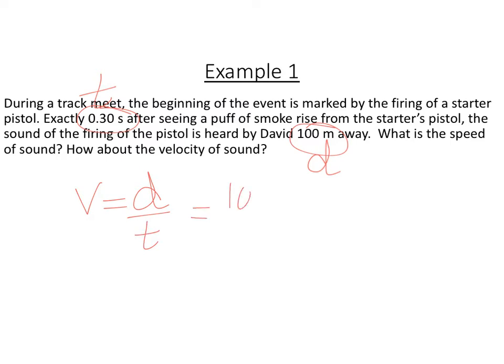So V equal D over T. So distance is 100, time is 0.3. So that gives us 333, don't forget your units, meters per second. So this is our speed.